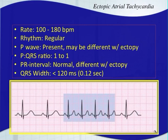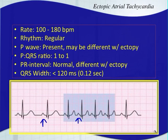We'll talk about that a lot more in 12 leads when we're looking at all the leads together. Ectopic atrial tachycardia does not have to have a negatively deflected P wave — it might be negatively deflected but it doesn't have to happen. Your rate is going to be between 100 and 180 beats per minute. Your rhythm is regular. Your P wave is present but it will be different with the tachycardia — that's how you know it's an ectopic atrial tachycardia, because if it was a sinus tachycardia it would have the same shape throughout.